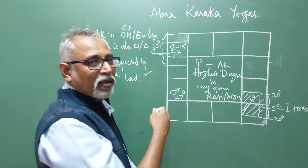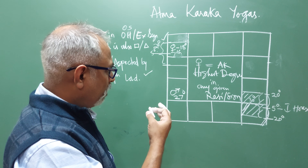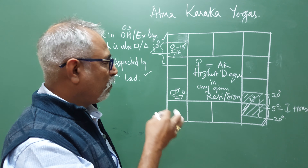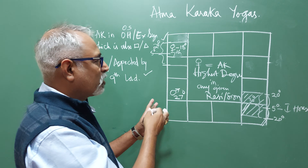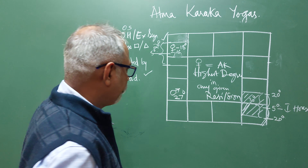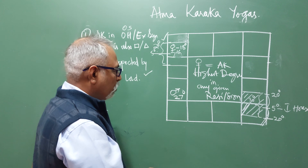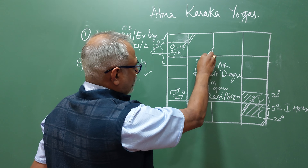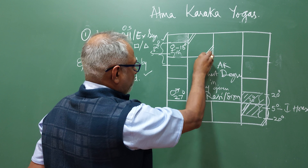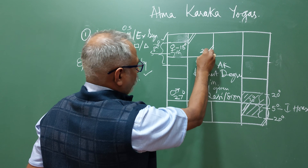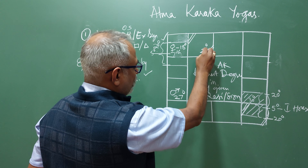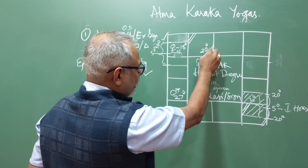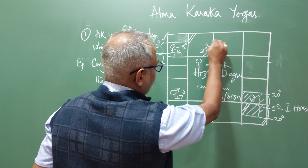The next rule is that the Atmakaraka should be conjunct and aspected by the 9th lord. Here, the 9th lord itself is Venus. So this is also agreeable — it should be conjunct and aspected by Venus. This particular yoga exists for this Lagna and this chart. Let us take another example to understand more clearly.